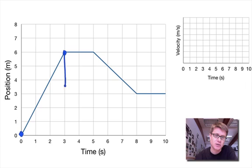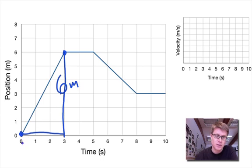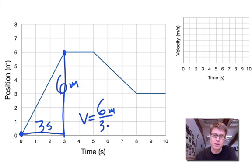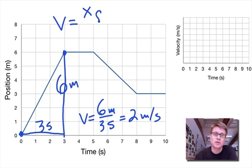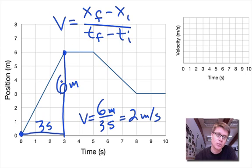We can use the slope of this line to figure out how fast the man is walking. The rise goes from 0 to 6, so the rise is 6 meters. The run goes from 0 to 3, so that's 3 seconds. The velocity is 6 meters divided by 3 seconds, which equals 2 meters per second. Velocity is position-final minus position-initial over time-final minus time-initial — and that's exactly what we're doing with slope.